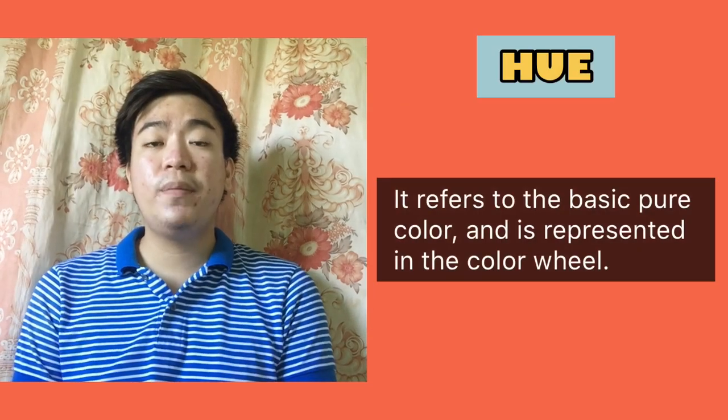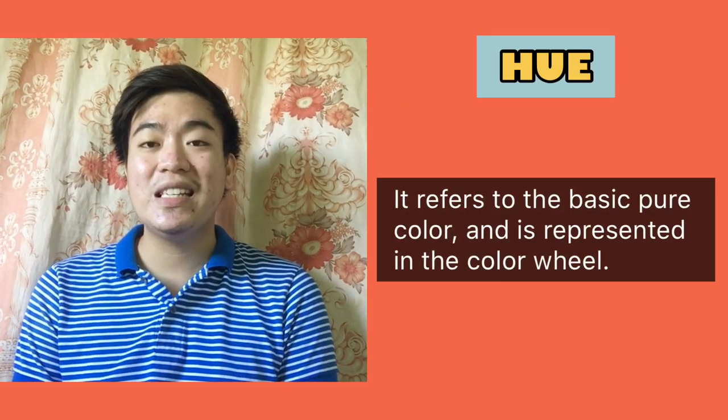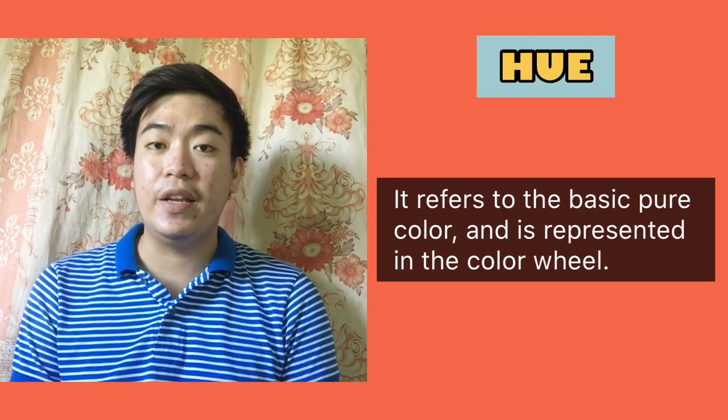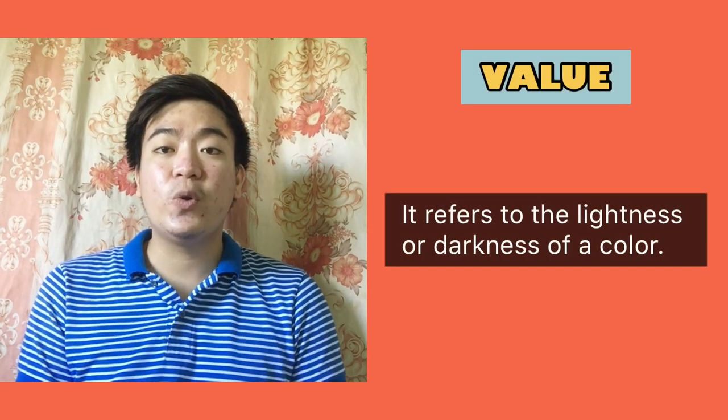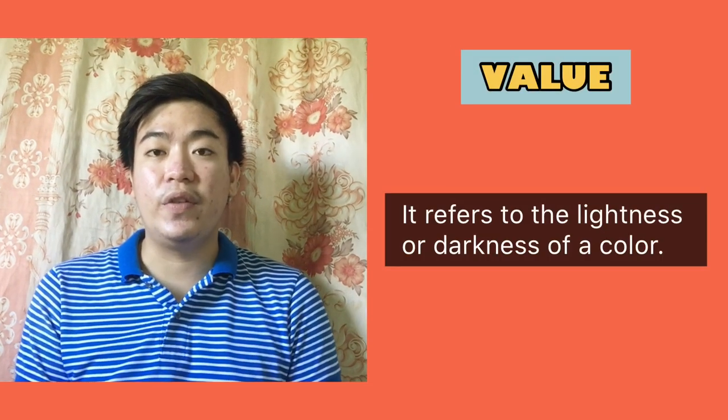Hue refers to the basic and pure color which is indicated in the color wheel. Value refers to the lightness or darkness of a color. A light color or tint is a result of adding white to a hue, and a darker color or shade is a result of adding black to a hue.